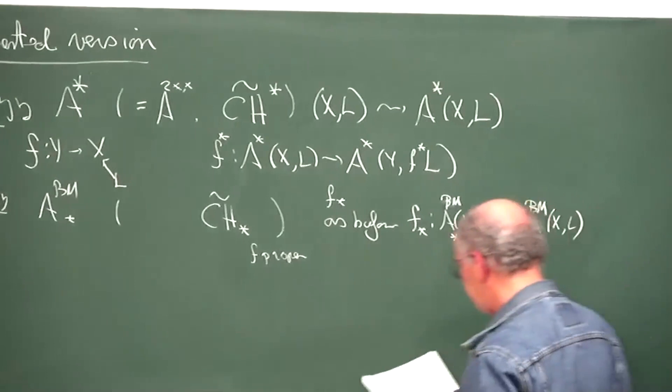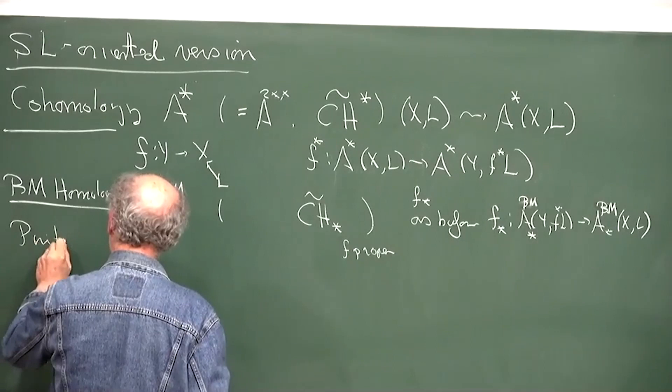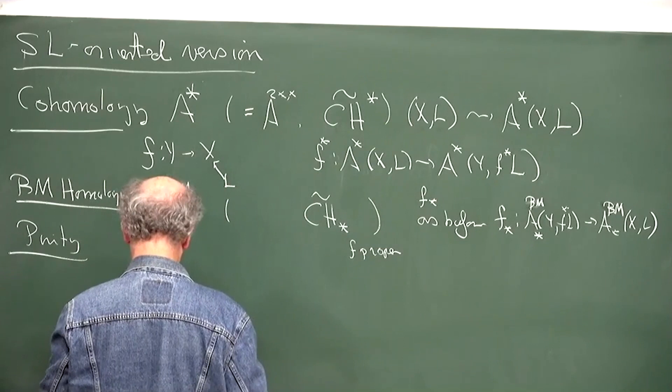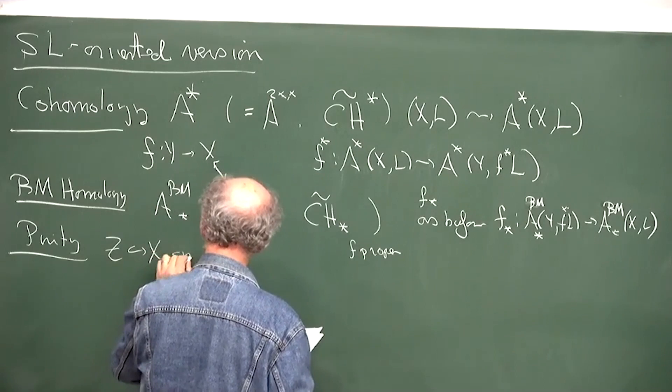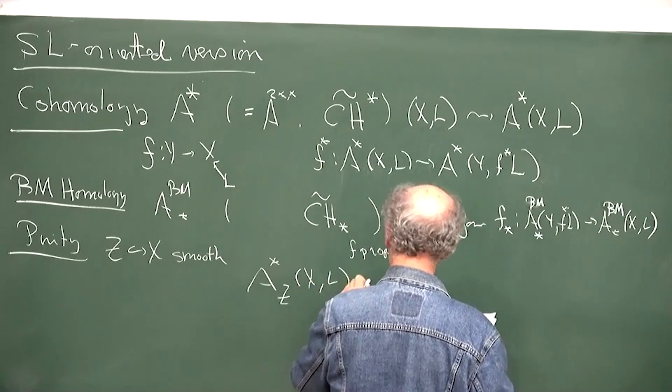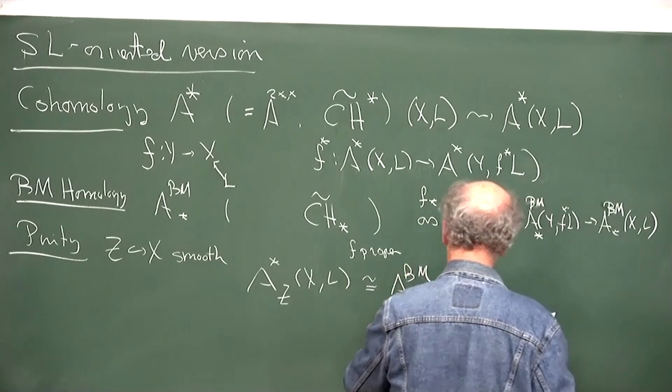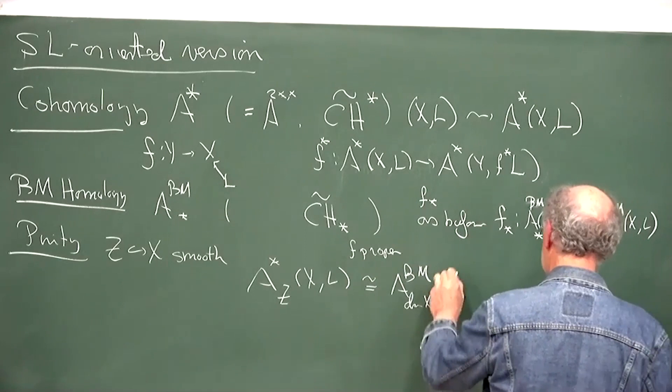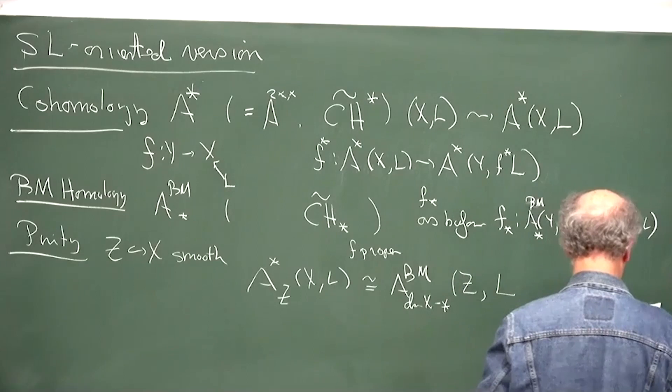The purity is where you start to see the use of these twists — up to now it's just a placeholder. If you have Z inside of X, both smooth, then the purity isomorphism or Poincaré duality isomorphism looks like this: it's isomorphic to the Borel-Moore theory in the same kind of degree on Z, but the twist changes. You restrict L and twist it by the determinant of the normal bundle of Z in X.